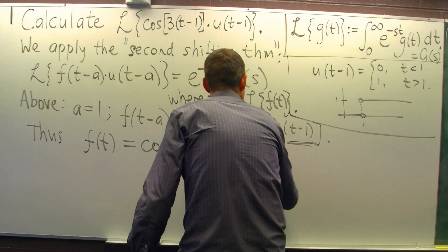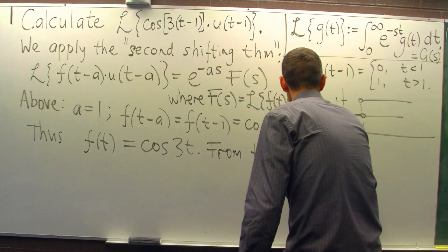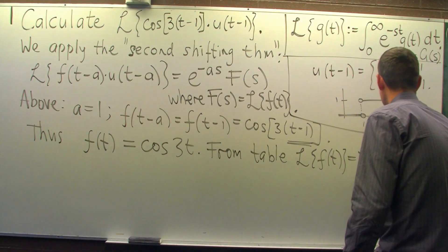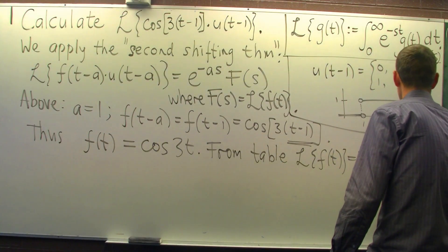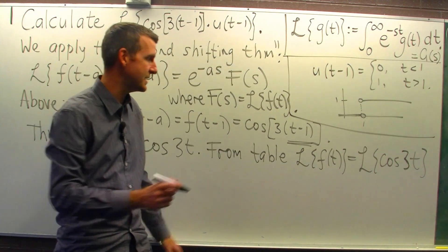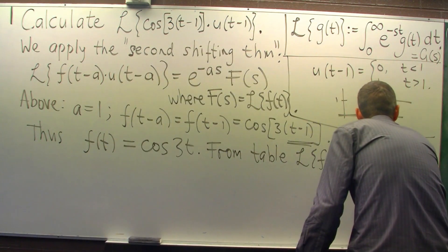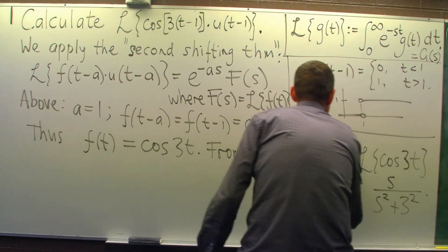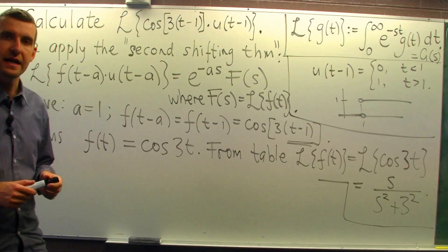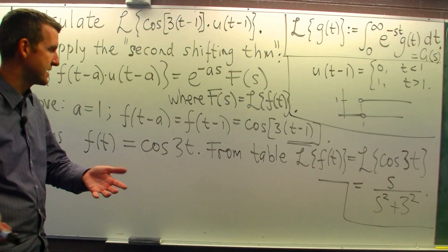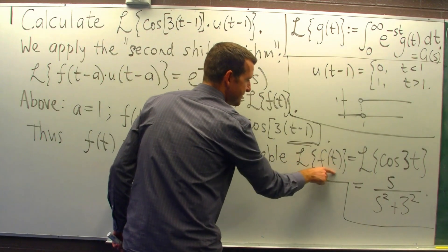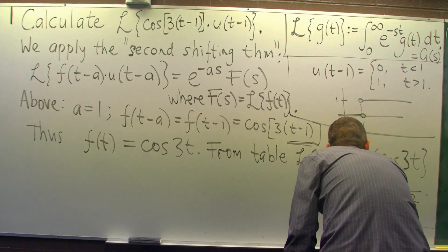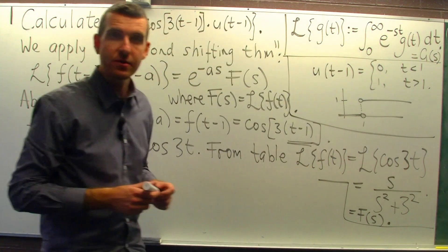So, from the table, the Laplace transform of cos three t is s all over s squared plus nine. So what do we do with that? We've got the Laplace transform of little f of t now. That's just big F of s.